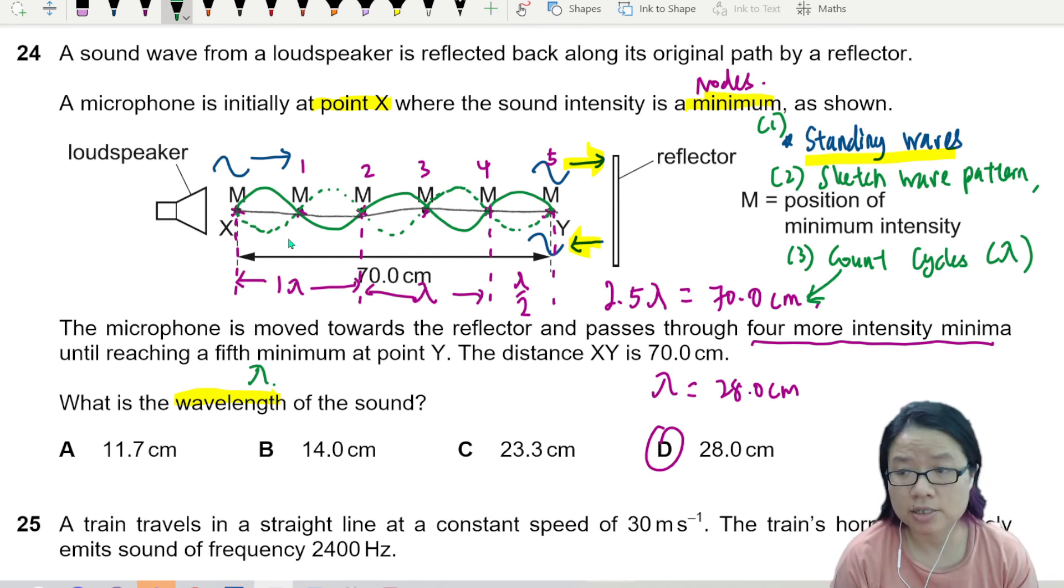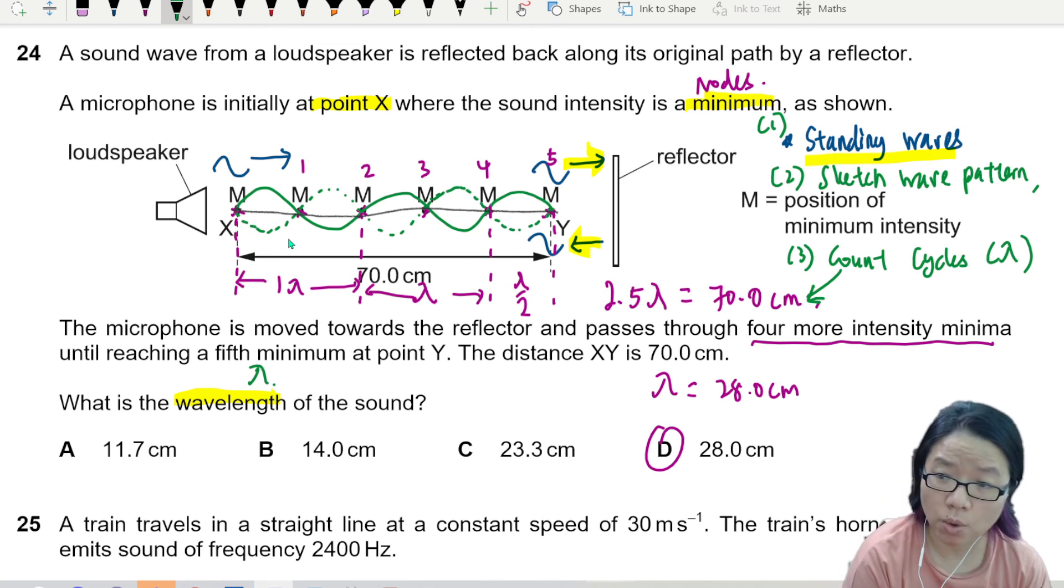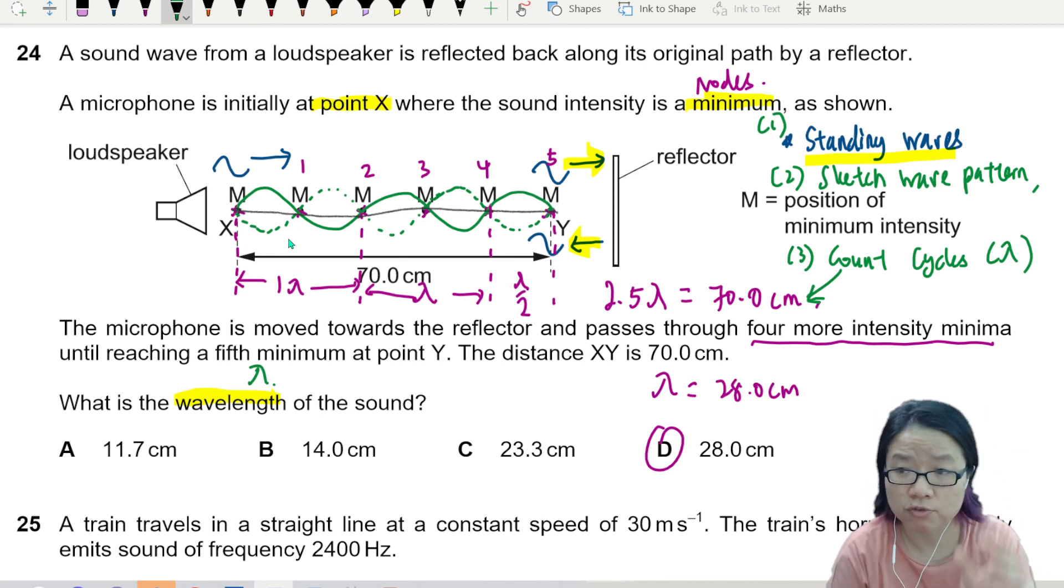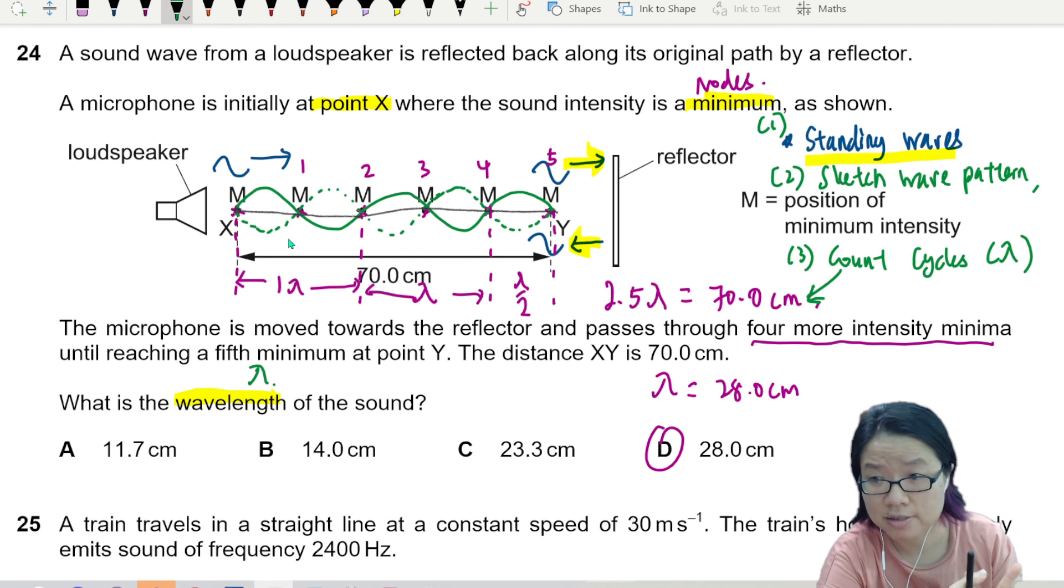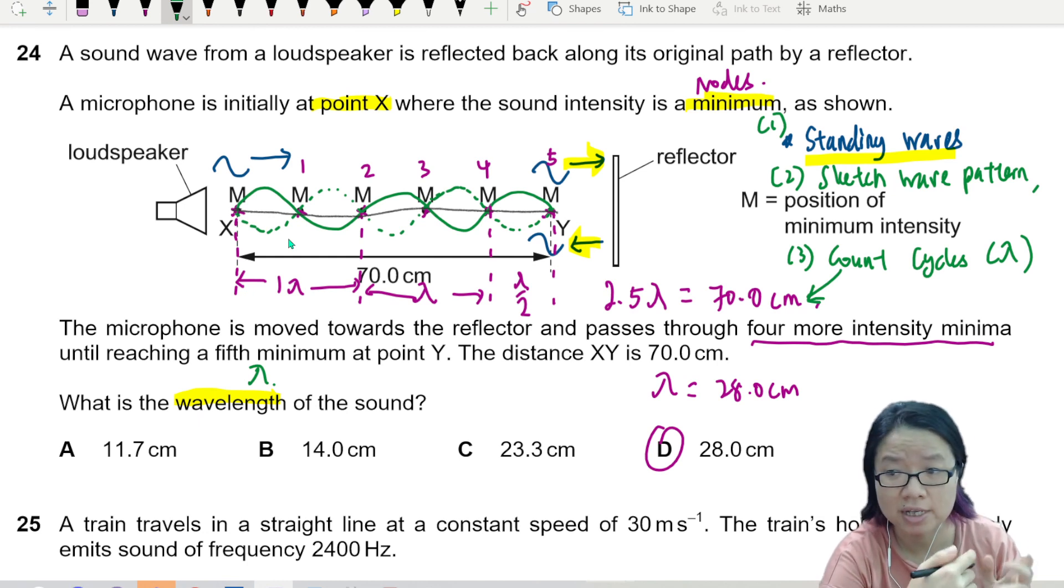This skill is very standard, will be tested in your paper one and maybe in your paper two. So if you cannot, you don't know when we get standing wave, or you do not sketch the wave pattern, go and watch the lecture videos in our playlist. Count the cycles and then equate them to lambda. Sometimes they will ask you to find the frequency by giving you the speed of the wave, but that is not the case for this question. That's it for this one.